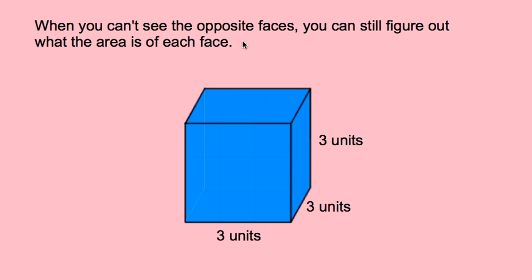Sometimes you have this rectangular solid — this prism that you can't see through — and you can't see the back side. Even when you can't see that, you have to know that there are six faces on this cube, not just three. I can see three, but I have to know that there are actually six faces on there.